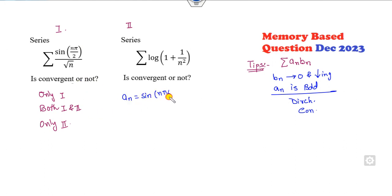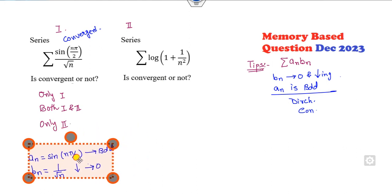If you look at that, if I consider aₙ is sin(nπ/2) and bₙ is 1/√n, clearly this is a bounded function, this is decreasing and goes to zero. So both properties are satisfied - yes, this is a convergent series.